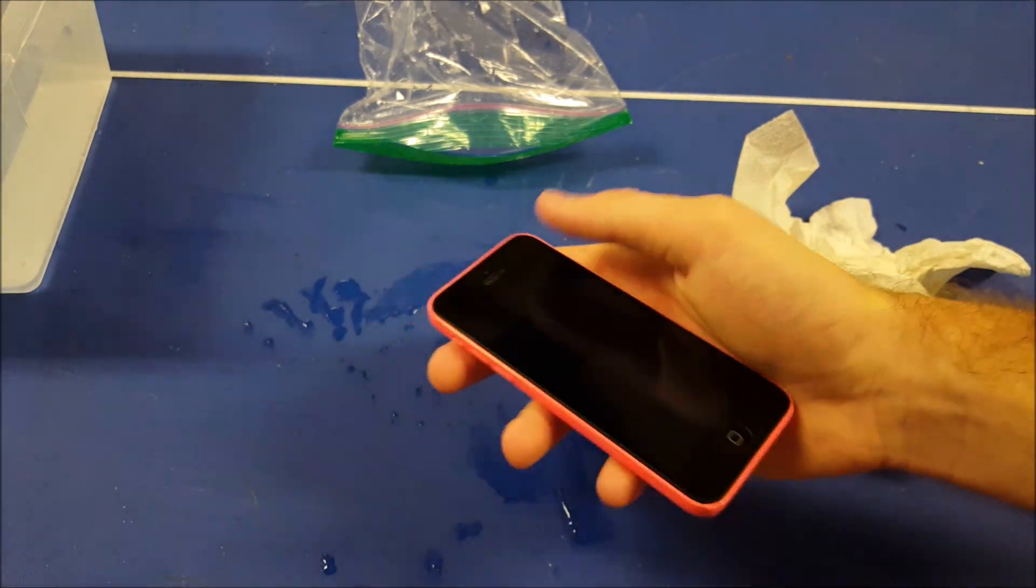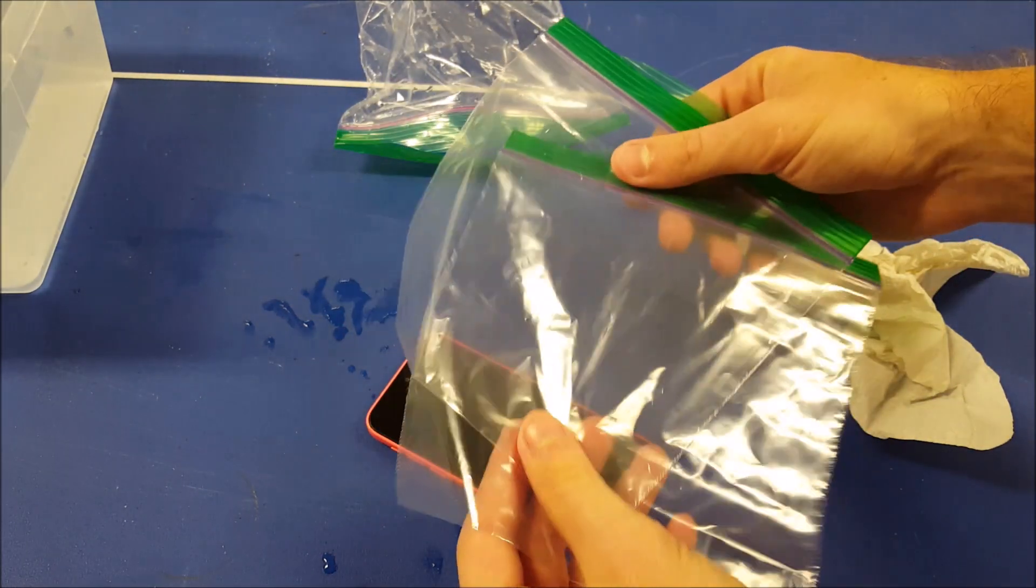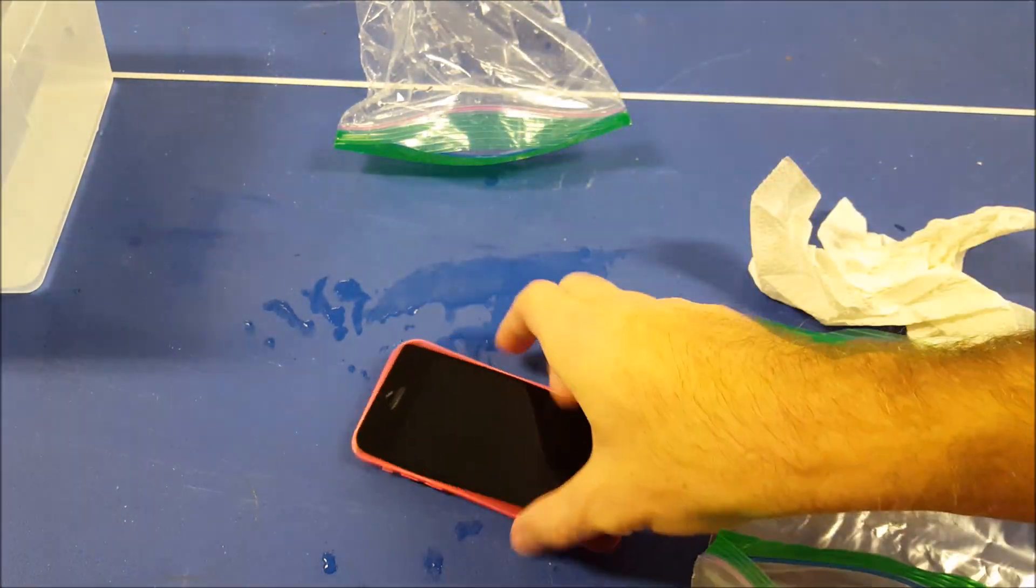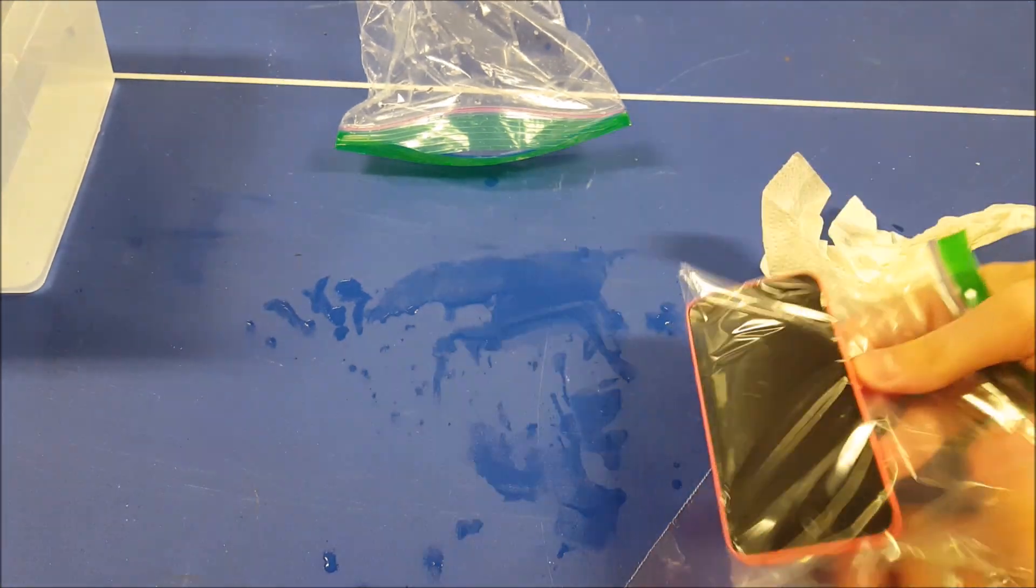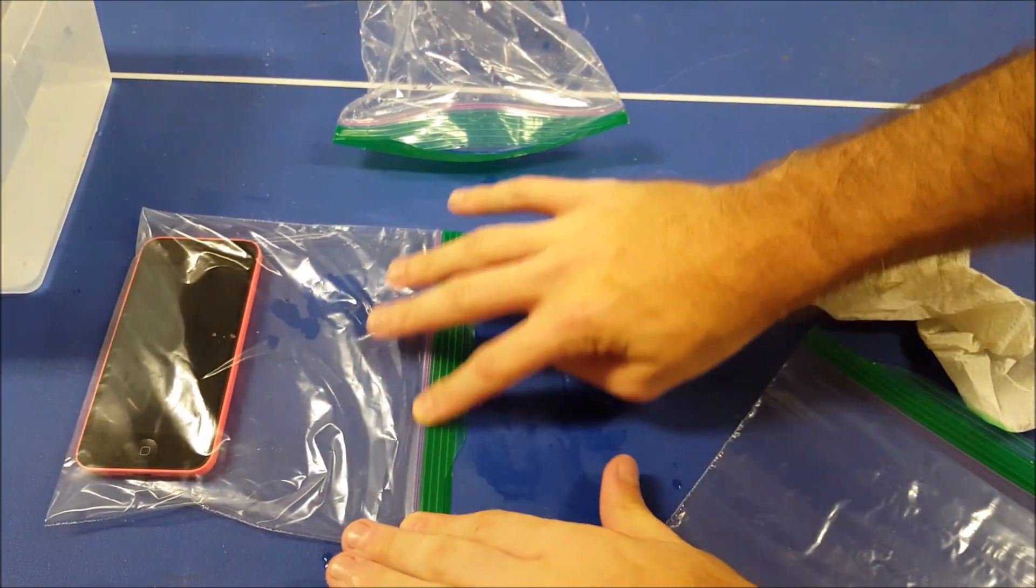Now what I'm going to try to do is double it up. We're going to try two Ziploc bags. So put the phone in one, put it all the way down there, empty out the air, seal it up.